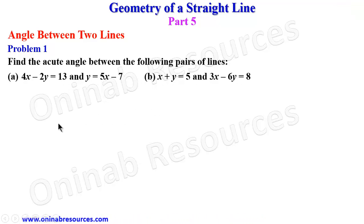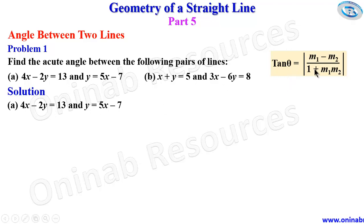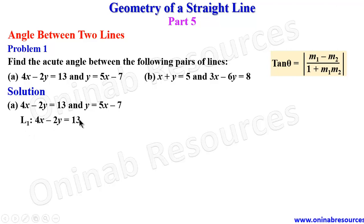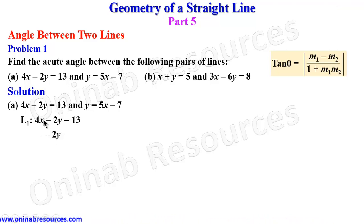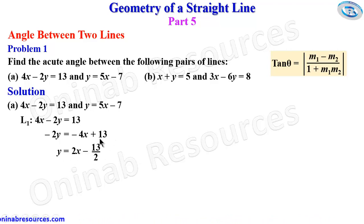Starting the solution from part a, we recall our relation for calculating acute angle. In order to get m1 and m2, we express the equations of the straight lines in standard form. For the first line, 4x minus 2y equals 13, we make y the subject: negative 2y equals negative 4x plus 13. Dividing through by negative 2 gives y equals 2x minus 13 over 2, since negative 4x divided by negative 2 gives 2x.